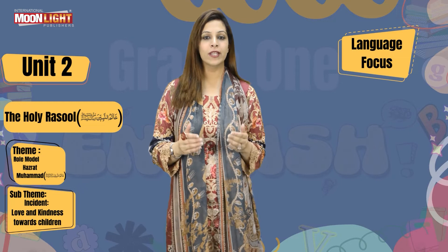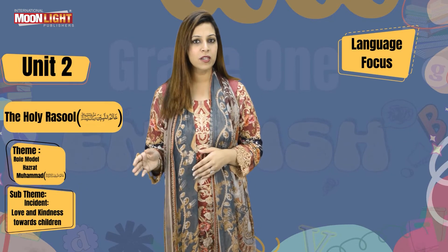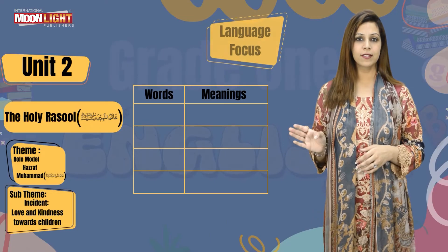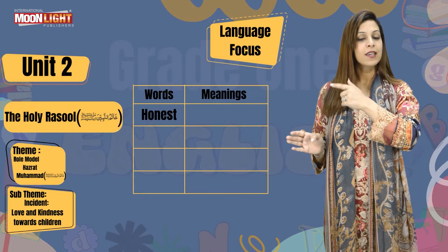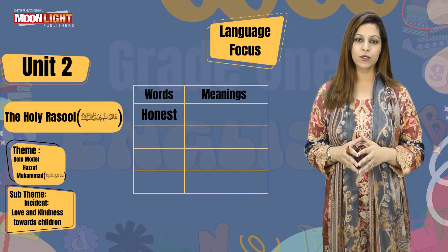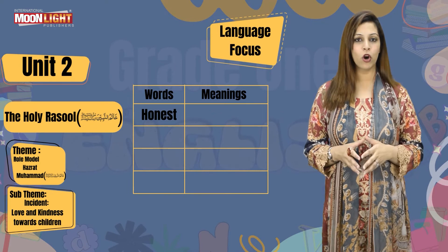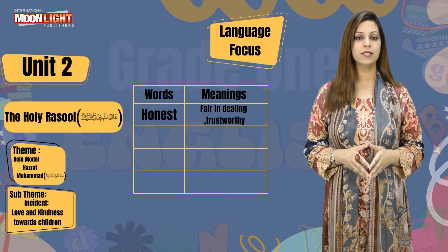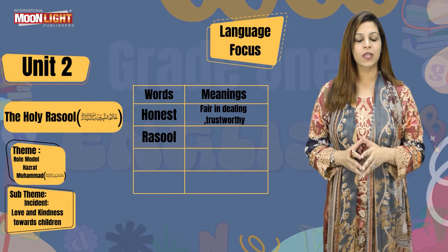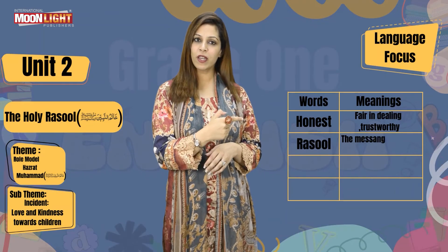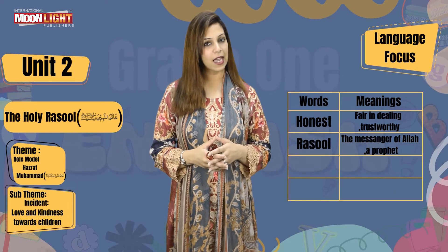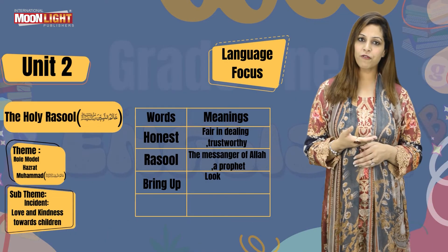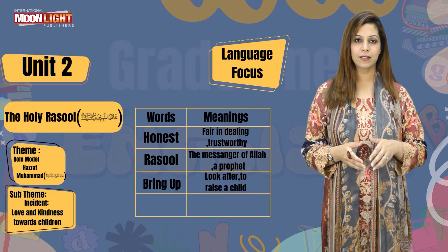Now it's time to move towards our second category, language focus, on page number 29. There are some words and we are going to learn their meanings. The first word is 'honest' — the H is silent, so we say 'honest' — and its meaning is fair in dealing or trustworthy. The second word is 'rasool' and the meaning of rasool is the messenger of Allah or a prophet. The last word is 'bring up,' which means to look after or to raise a child.